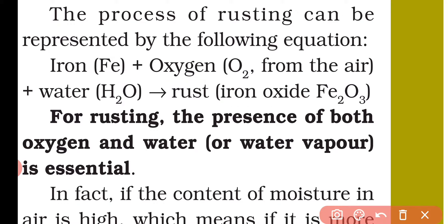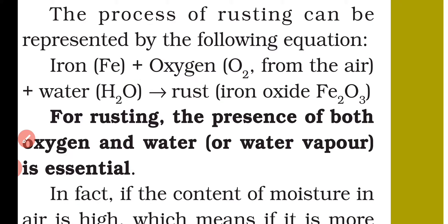When we want to control rusting, we have to control either the oxygen or the water. Controlling oxygen is not possible because the atmosphere is essential for us and oxygen is abundantly present in it. But preventing rusting by controlling water can be done — it can be done by using paint or any type of grease.